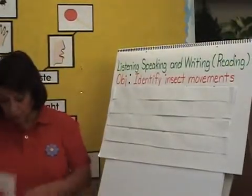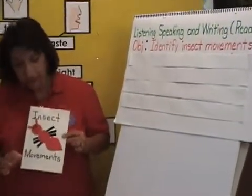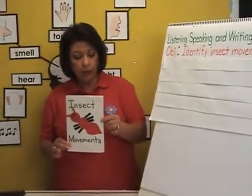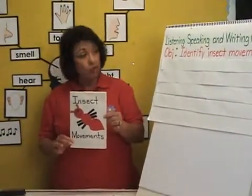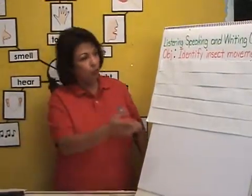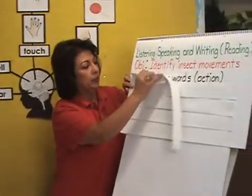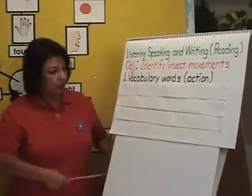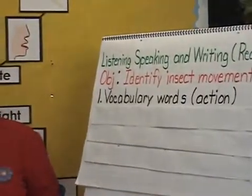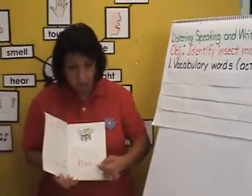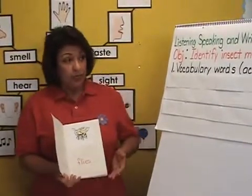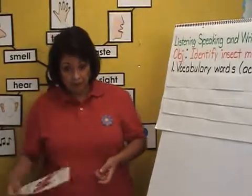The children will be creating an insect movement booklet. Through this booklet, we are reinforcing skills that the children will be developing. The first skill is vocabulary words. The children will be writing vocabulary words of the movement of the insect. They will be learning about action words, and this will also help them expand their vocabulary.